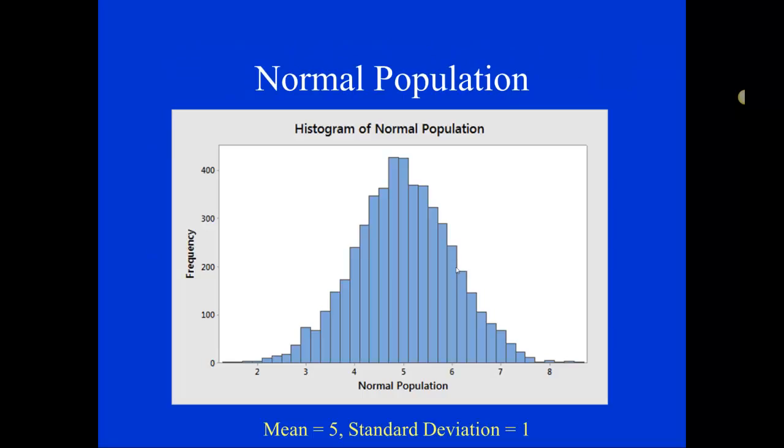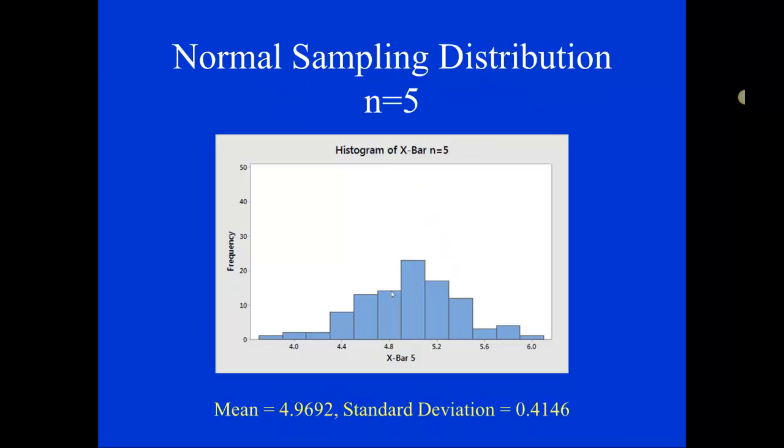So if you recall from the previous video, we started by looking at a normal population. So this is the population, these are individuals that are represented in this histogram. The mean of all those individuals in the population was 5, standard deviation was 1. We started by taking samples of size 5, and we looked at the means from samples of size 5, and we got our simulated sampling distribution that looked like this.